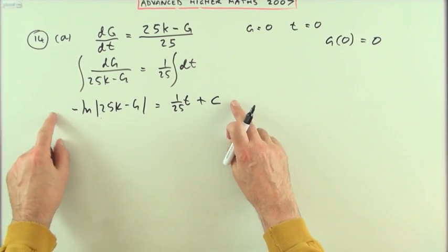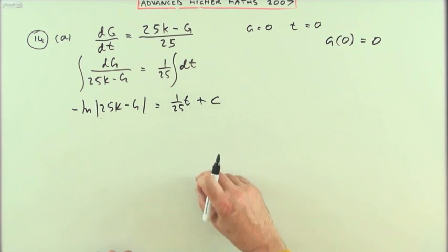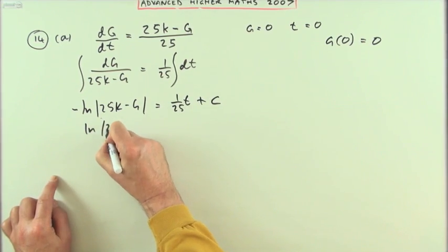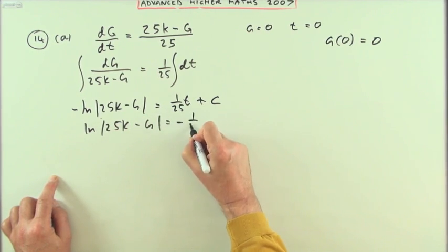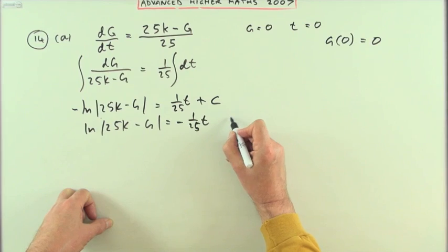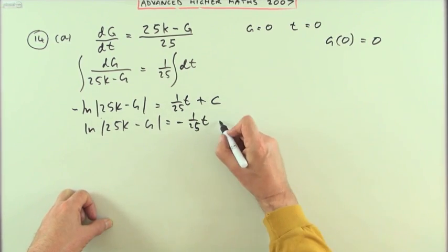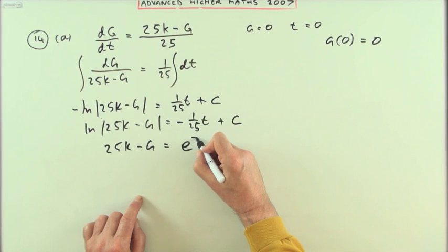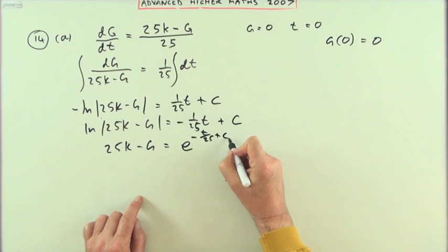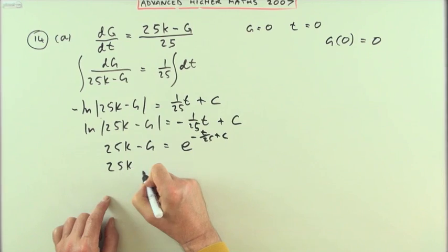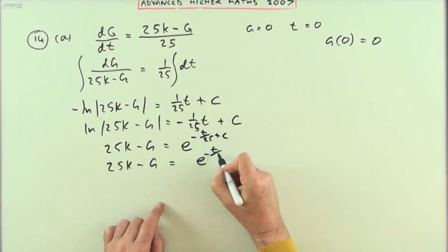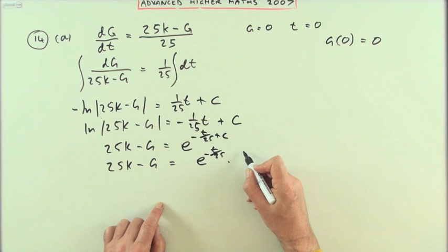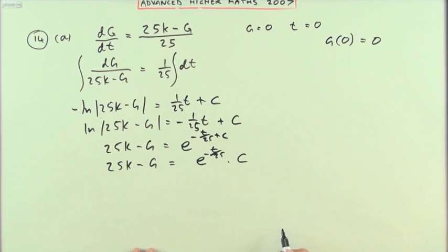Or just to be annoying maybe I will go through it again, letting c go through the various operations but keep reappearing as itself. So get rid of that negative. So I've got ln(25k - g) = -(1/25)t. But rather than writing minus c which could be written as plus some other number I just leave it as plus c. And then getting rid of the log, 25k - g will be e^(-(t/25) + c). So 25k - g will be e^(-t/25). Now if you're adding powers you could be multiplying the e's. So it's times e^c. But times e^c is just some other number which again could call c.